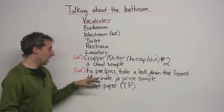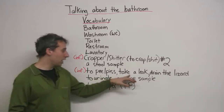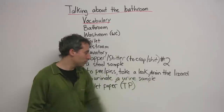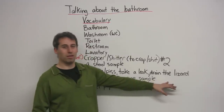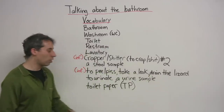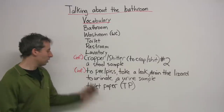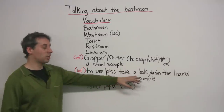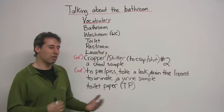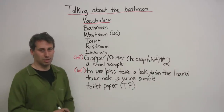Some more informal language for the other side — the front side — is 'to pee,' 'to piss,' 'to take a leak,' or 'to drain the lizard.' I think 'drain the lizard' is more of a male thing. All of these are informal. You might say to your friends, 'Oh, I gotta piss,' 'I gotta pee,' or 'I've been drinking so much beer, I gotta take a leak.'